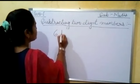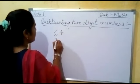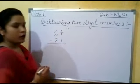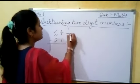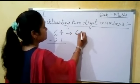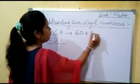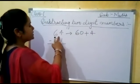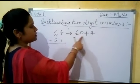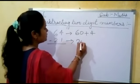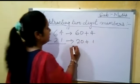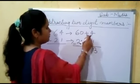We will subtract 64 minus 21. The first step is to write 64 in the form 60 plus 4. So 64 can be written as 60 plus 4. Now we will write 21 in the same way: 20 plus 1.